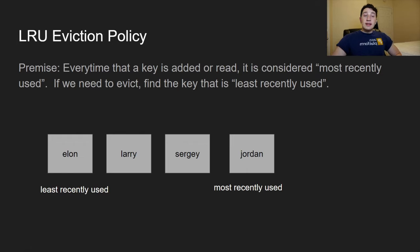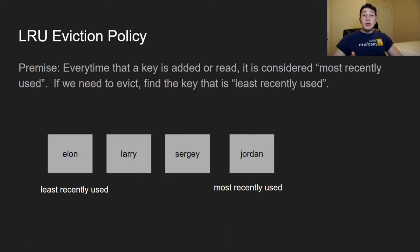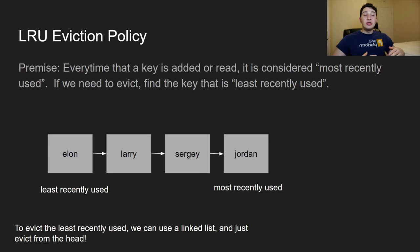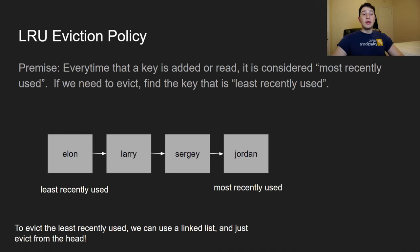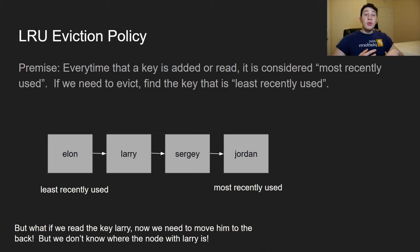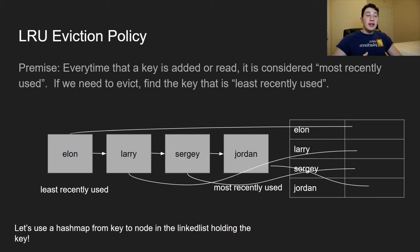Say we have four keys: elon, larry, sergey, and jordan — where elon is least recently used and jordan is most recently used. If we access larry, we need to move it to the most recently used position. A linked list makes sense: evict from the head and set the new head to the next element. But to move larry to the tail, we'd need to know its position, which requires a HashMap from key names to their nodes.